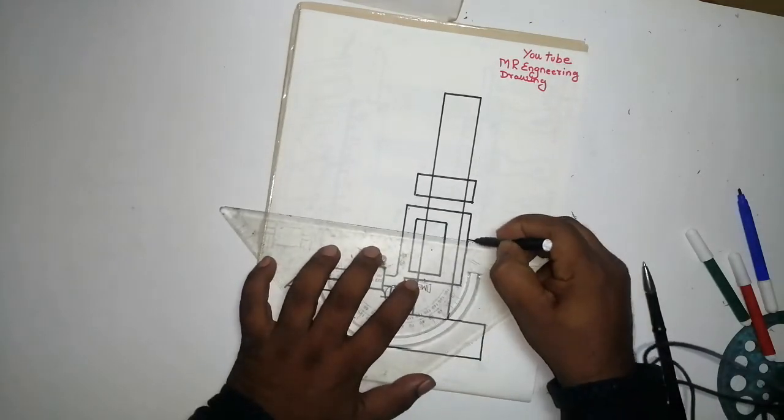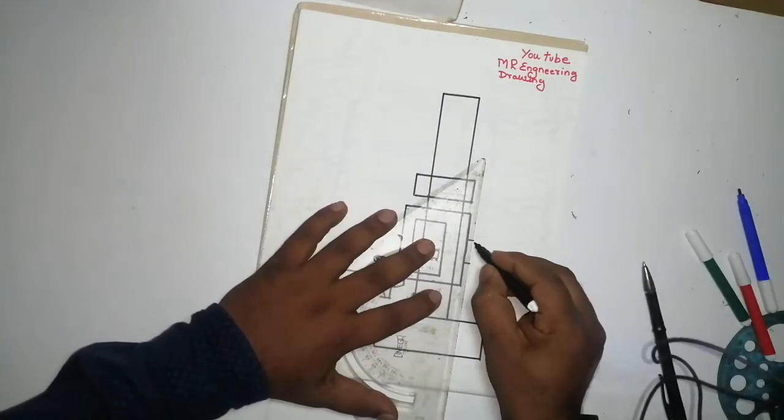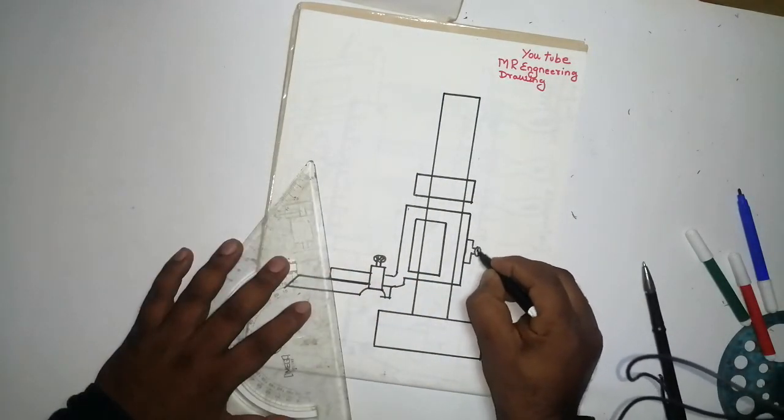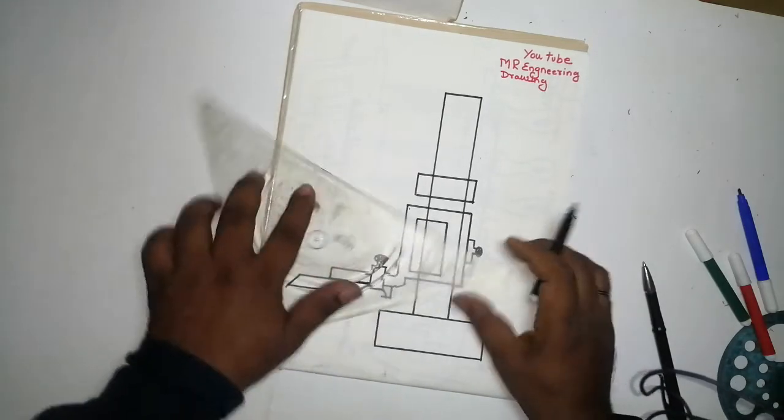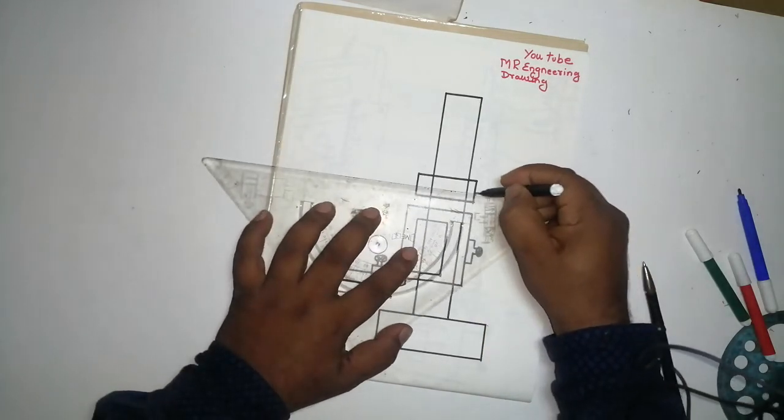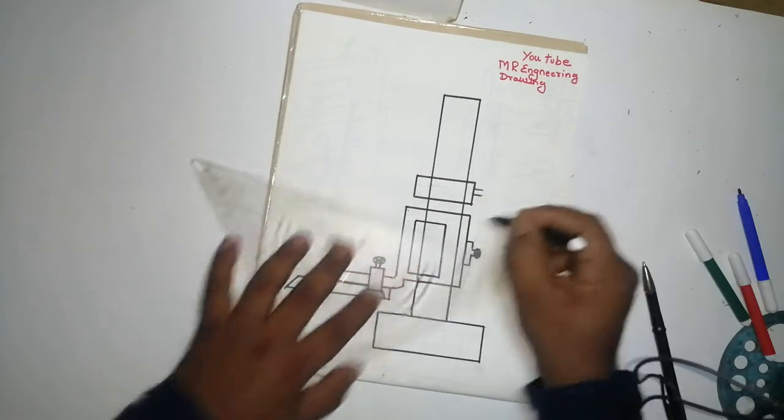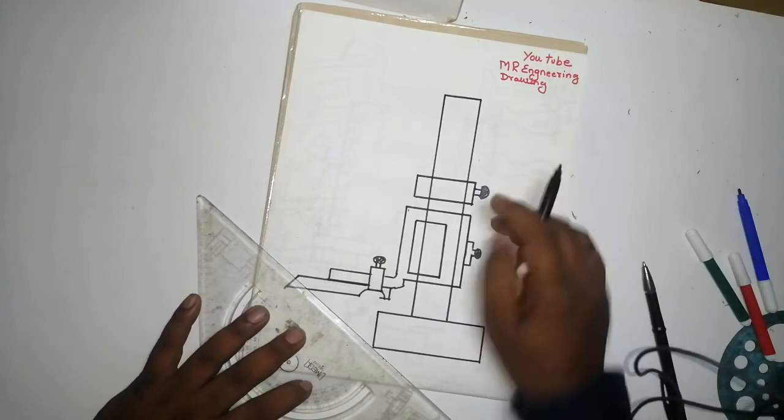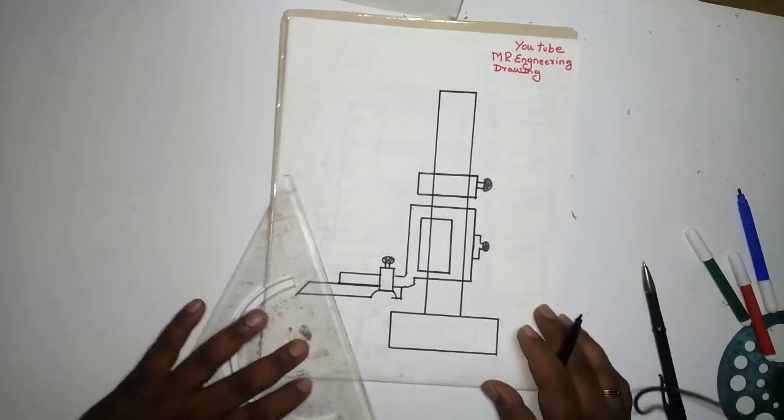This is the scriber being locked in this net. One lock will come. This is for adjusting the height and scribing up and down.